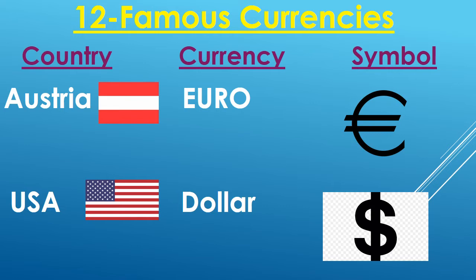So today we will learn some other countries. Number 1 is Austria. Austria is a country with its own flag. The currency of Austria is the euro. And the euro has its own symbol.